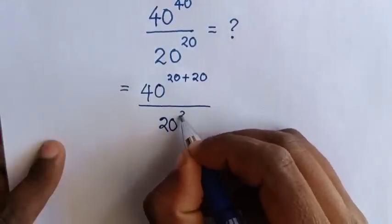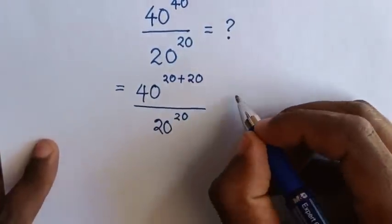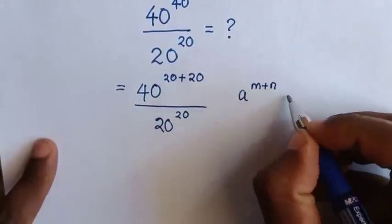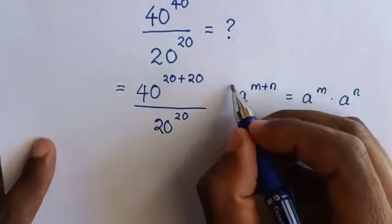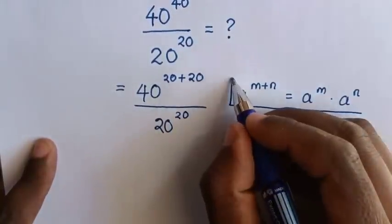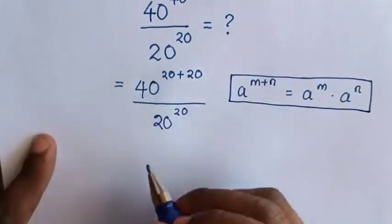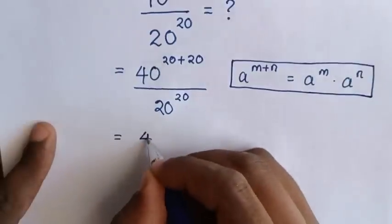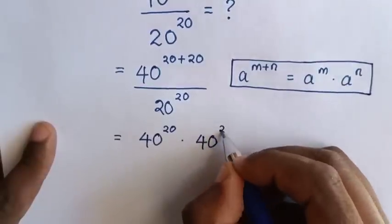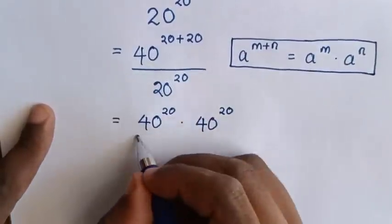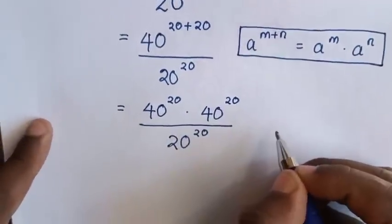Then from here, we will apply the exponential rule, which is: a power of m plus n is equal to a power of m times a power of n. In here it will be multiplication of exponents, so it will be equal to 40 power 20 times 40 power 20, over this 20 power 20.